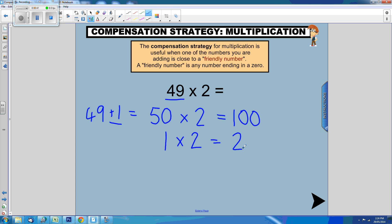To find the answer to 49 times 2, we simply subtract this from this. We need to subtract the 2 because we added the 1 in the first place. So, 100 take away 2 equals 98.